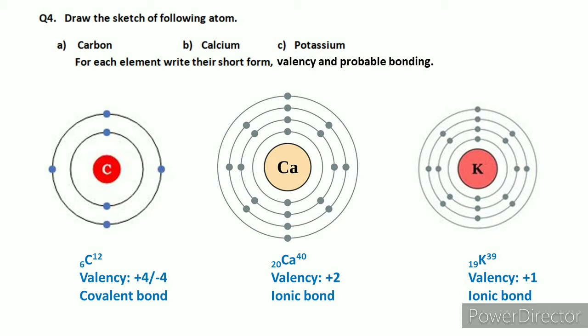Now for valency: calcium's outer shell has two electrons, but for stability it needs eight. Getting six more electrons is not possible — maximum four electrons can be gained. So calcium instead gives away its two electrons. When it gives away two electrons, it gets a plus two charge. Calcium forms an ionic bond by donating its two outer electrons, making calcium a 2+ ion.